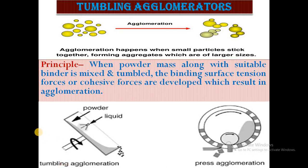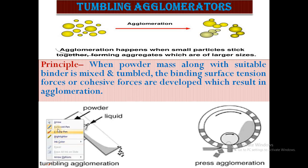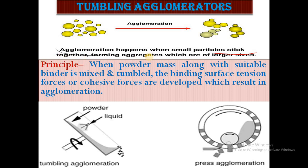In this video we will see tumbling agglomeration. First, we will look at the agglomeration technique. Agglomeration happens when small particles stick together forming aggregates of larger size. Simply put, agglomeration means when smaller particles combine with each other, we get larger particles. This technique is called agglomeration.